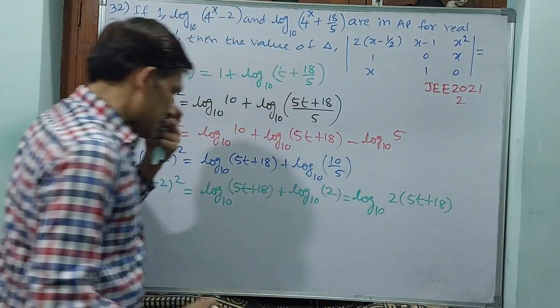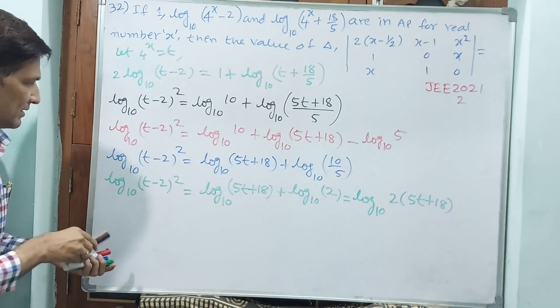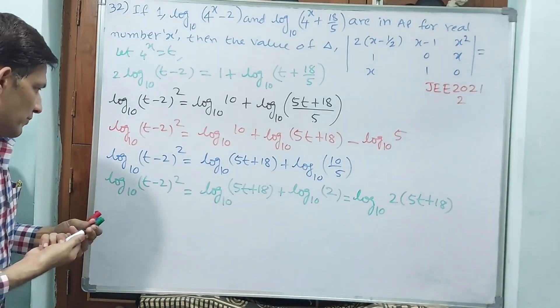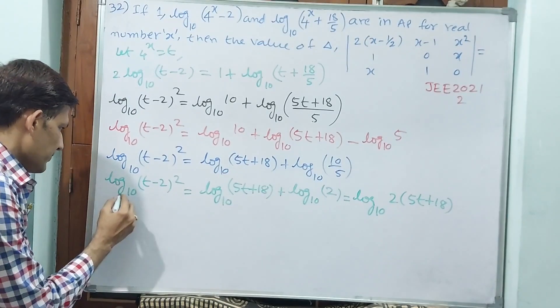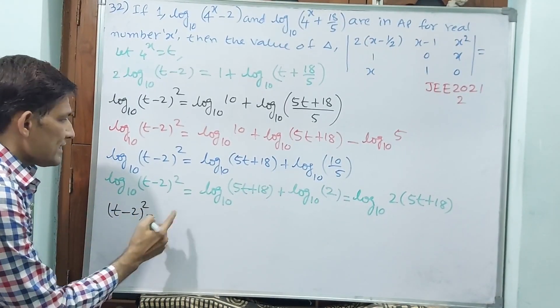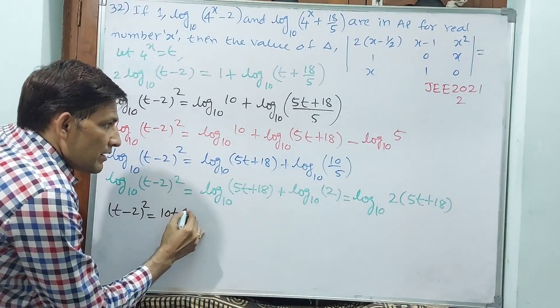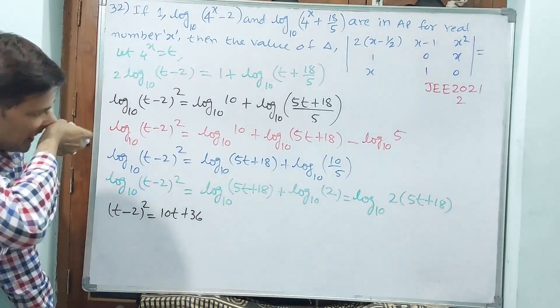Okay, because I don't have space. Now see how I am writing: (t - 2)² is equal to this one, 10t + 36. Okay, log done, log done. I can see more.